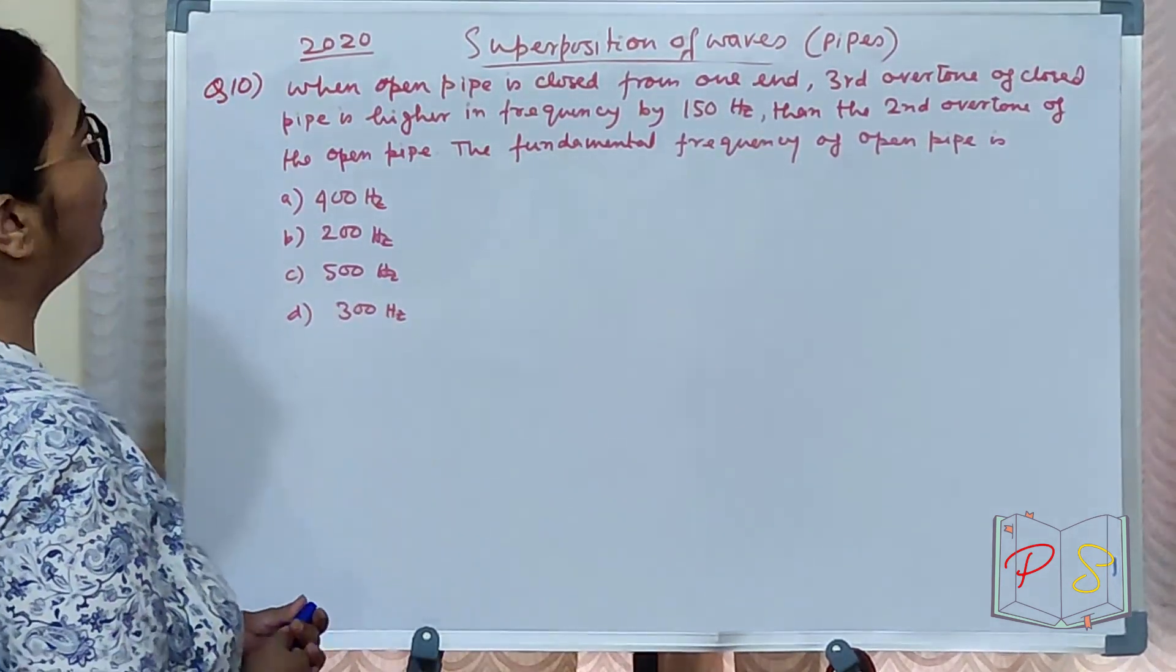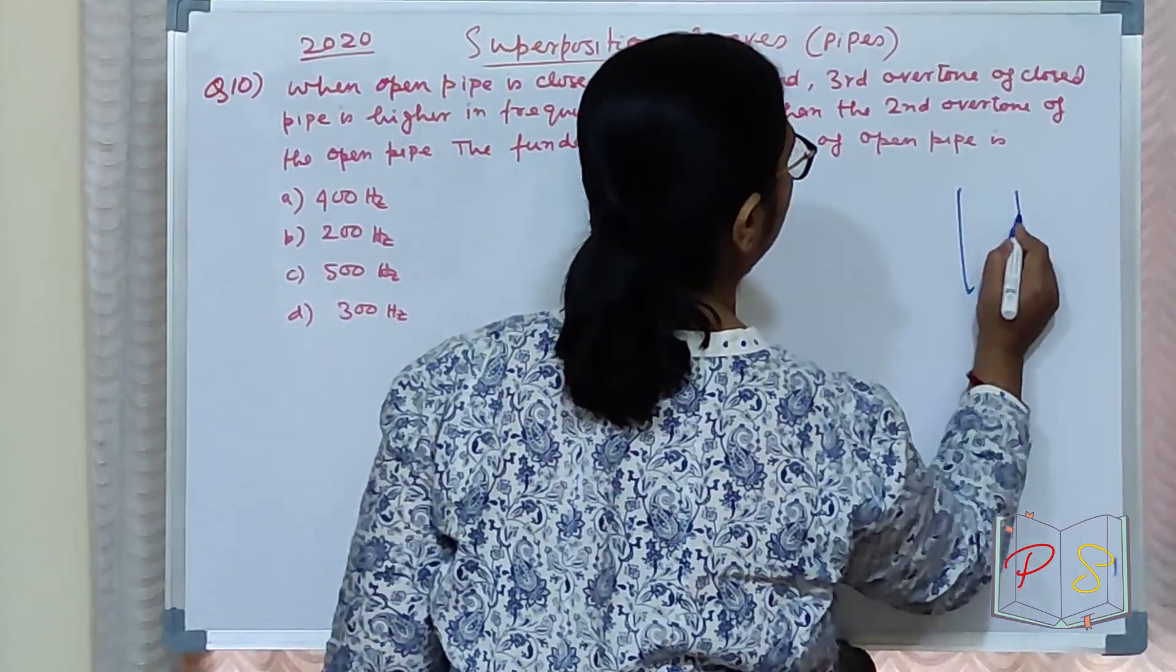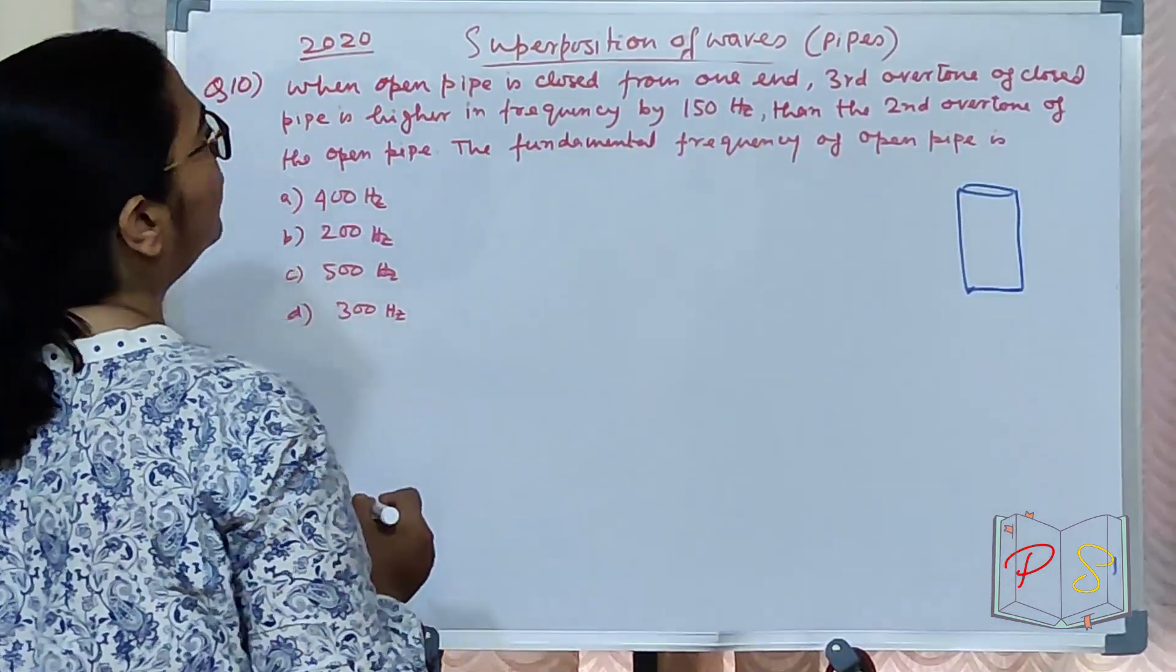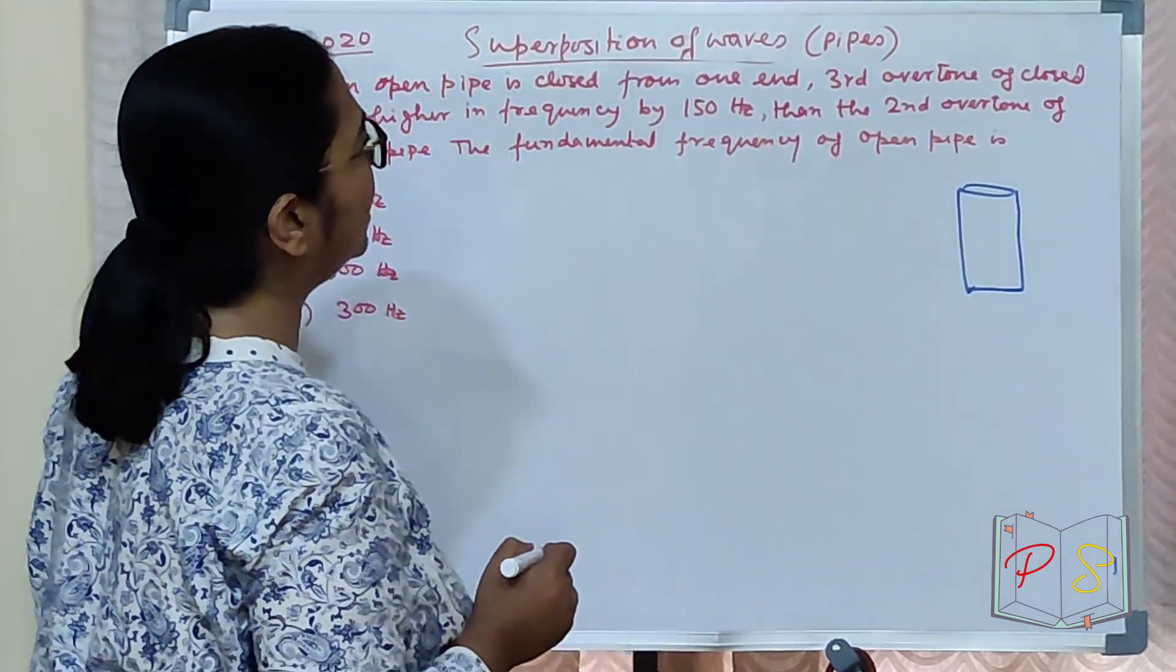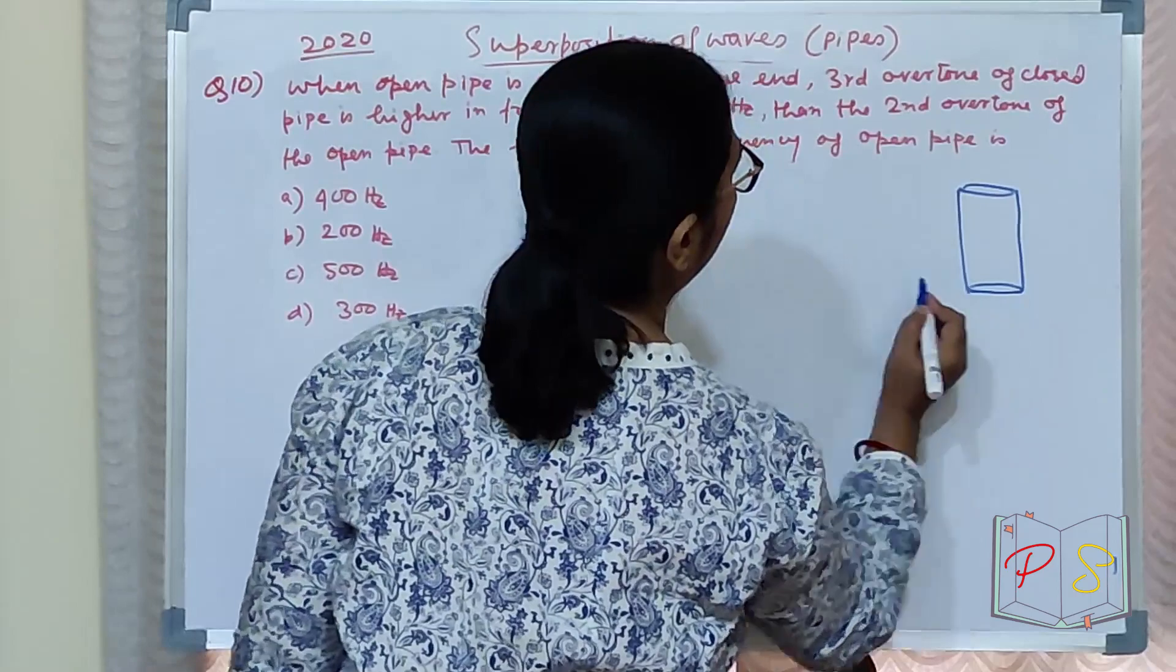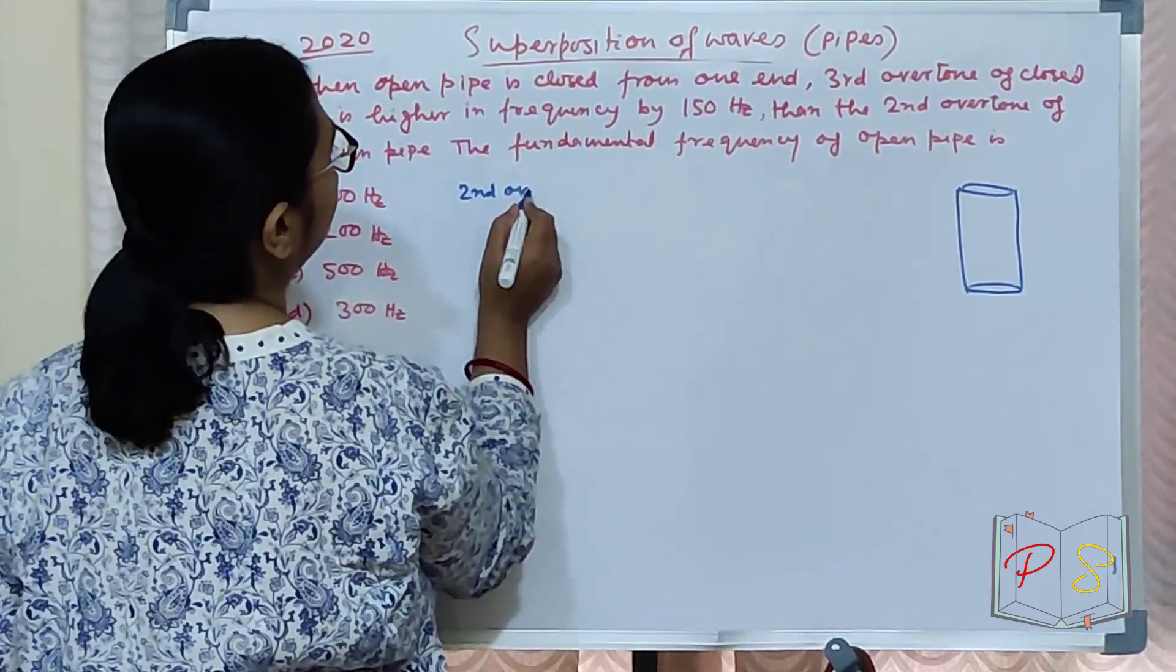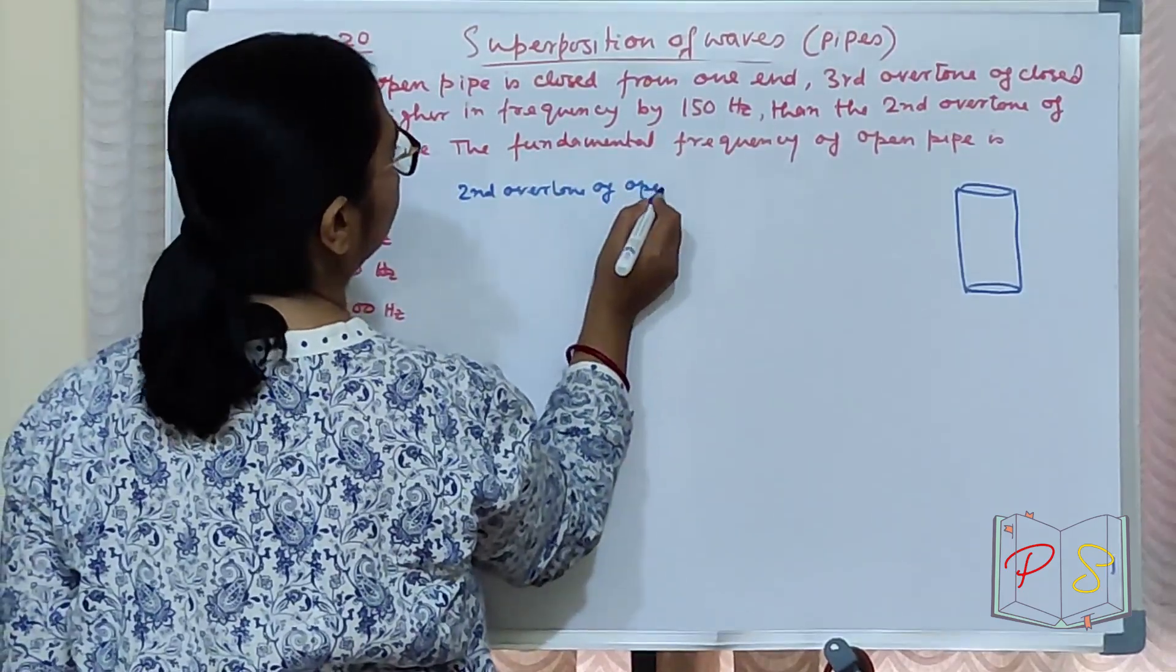When an open pipe is closed at one end, the third overtone of the closed pipe is higher in frequency by 150 Hz than the second overtone of the open pipe. So first, let's find the second overtone of the open pipe.